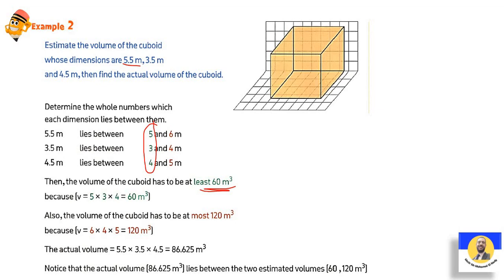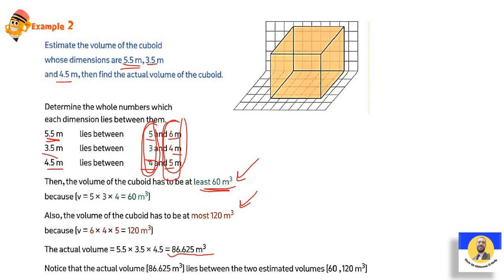In the maximum, it will be: 6 times 4 times 5. Because 5.5 is between 5 and 6, 3.5 is between 3 and 4, and 4.5 is between 4 and 5. Take the smallest numbers and multiply, then the greatest numbers and multiply. So the actual volume is in between 60 and 120. The actual volume is in between 60 and 120.